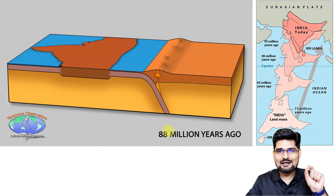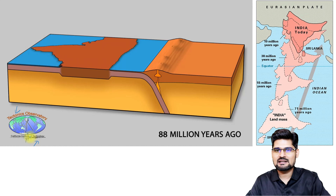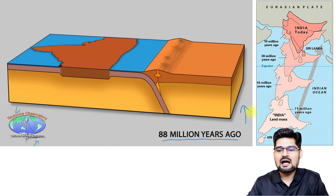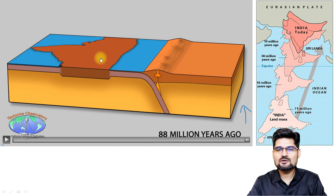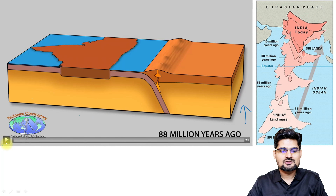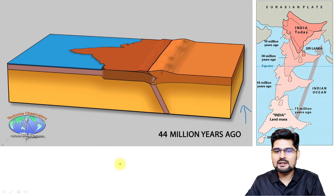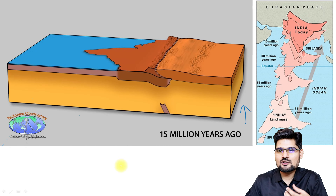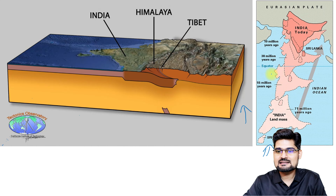There is a simulation video from the Tectonics Observatory at the California Institute of Technology. It shows progression from 88 million years ago to the present. The Gondwana land is hitting the northern portion, also referred to as Angara Land or the Asian continent. Watch the timeline and observe the formation. You can see how the Himalayan region, including the Tibetan Plateau, gradually formed over this period.